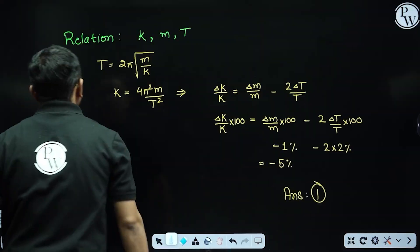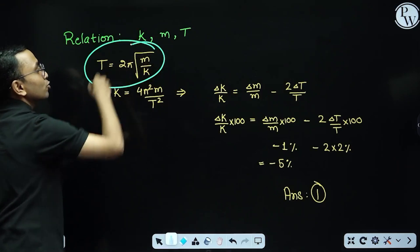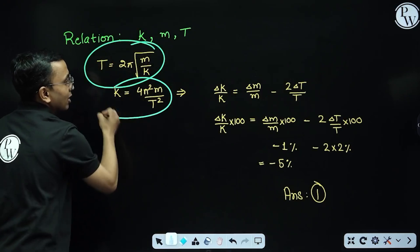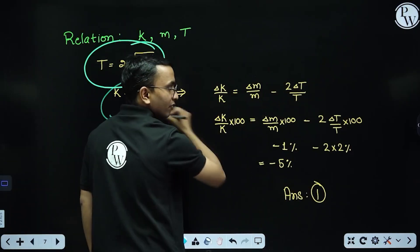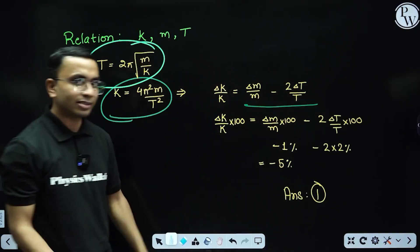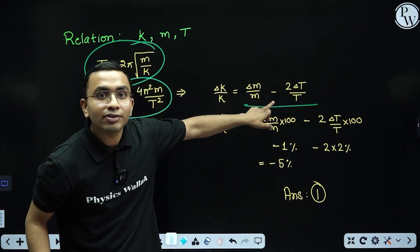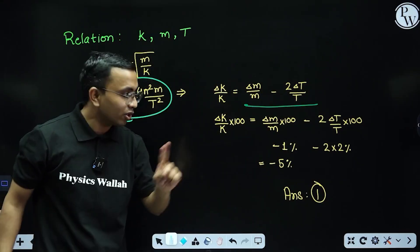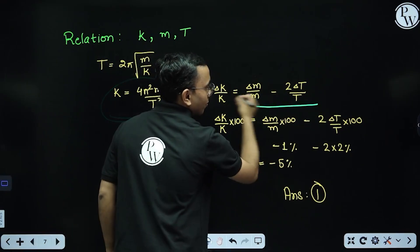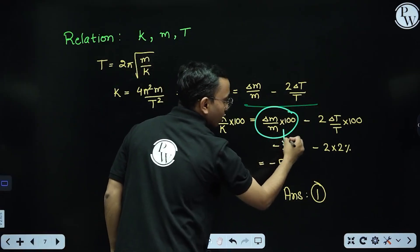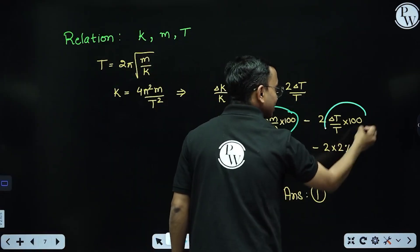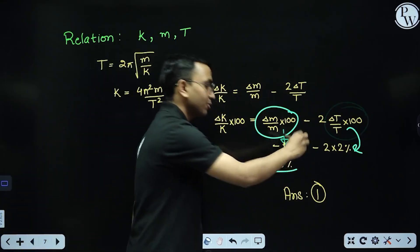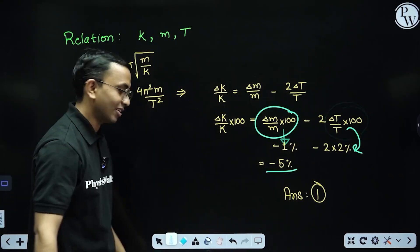I know the expression: T = 2π√(m/k). From there, write the expression for k, then differentiate. I am considering the negative sign only, not positive, because I need to determine whether the error is positive or negative. Putting the values: one term is −1% and the other is +2%, giving a combined result of −5%, which is option one.